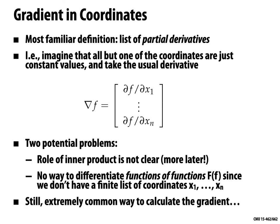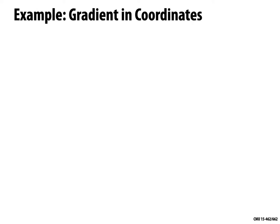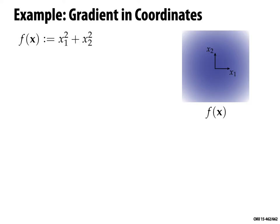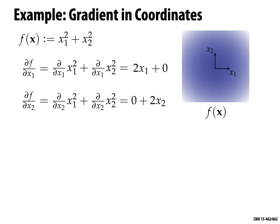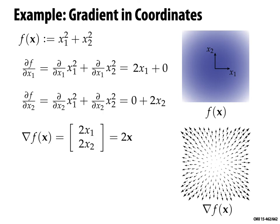For a concrete example, let f(x) = x1² + x2². The partial derivative with respect to x1 holds x2 fixed, so we get 2x1. Similarly, the partial with respect to x2 is 2x2. Combining these, ∇f(x) = (2x1, 2x2), which we can also write as 2x. This bowl-shaped function has a gradient that points radially outward and grows with distance from the origin.